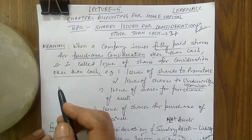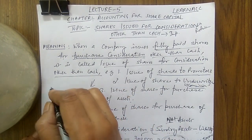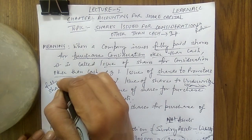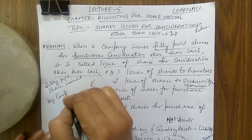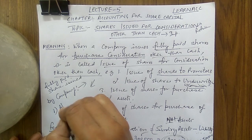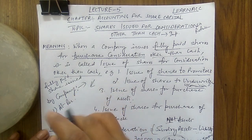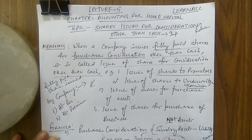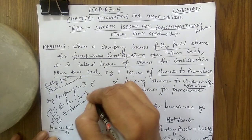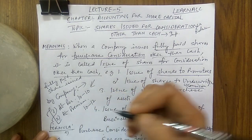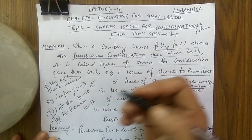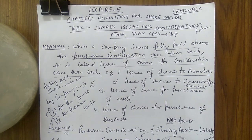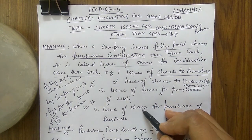Now regarding the shares that the company issues as fully paid — they can be issued at par (e.g., ₹10 share issued at ₹10) or at premium. Both cases may appear in exam questions. When shares are issued at premium, we need to prepare a working note to calculate the number of shares issued. This is required to determine the share capital amount.